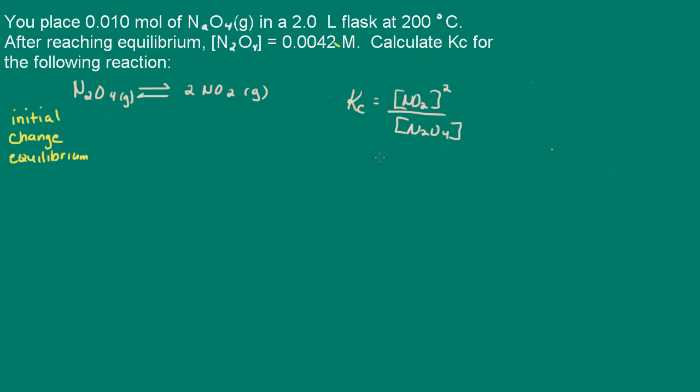We're told that 0.01 moles of dinitrogen tetroxide is put in a 2-liter flask. So that's going to be our initial concentration. So let's go ahead and calculate that. So we'll just calculate the molarity, and that's over 2 liters, 0.005 molar. So this is our initial concentration.